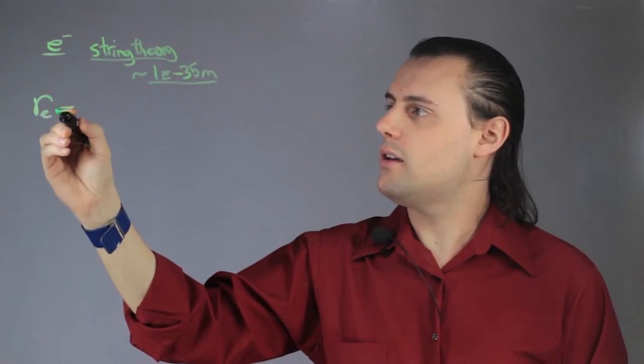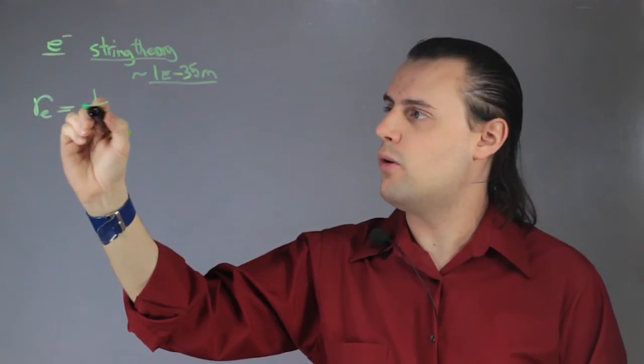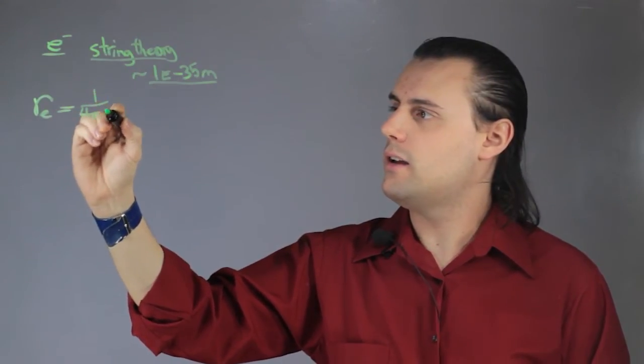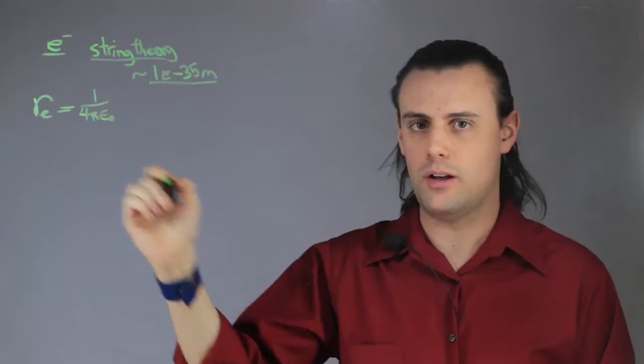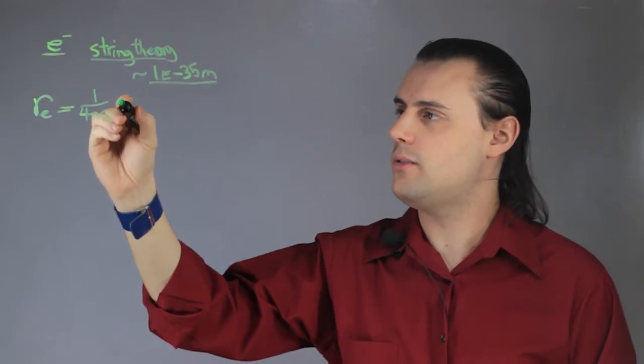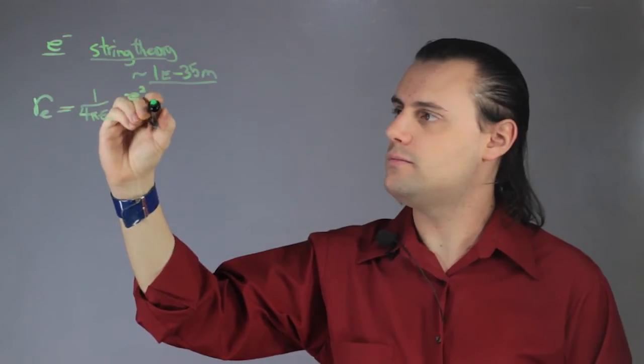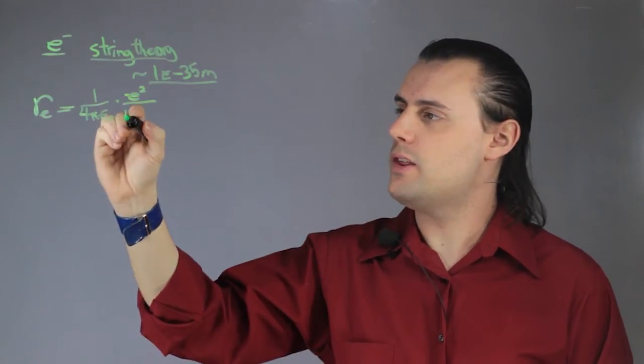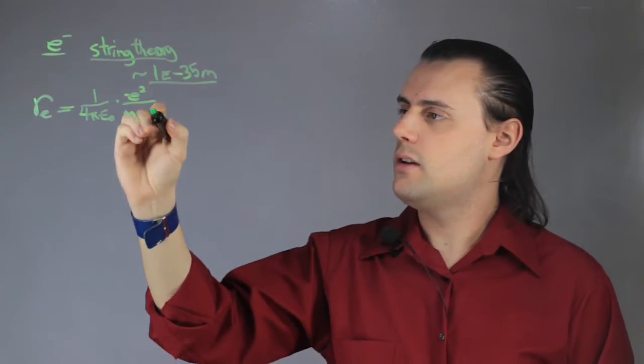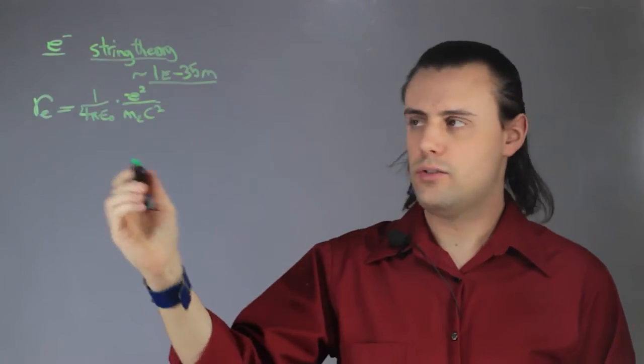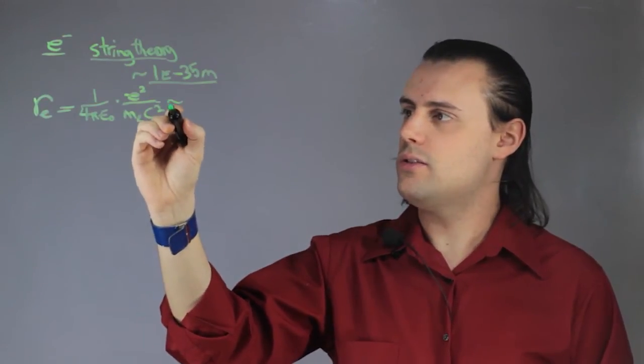The electron radius classically is defined as 1 over 4 pi epsilon naught, where epsilon naught is the permittivity of free space, times the charge of the electron squared,